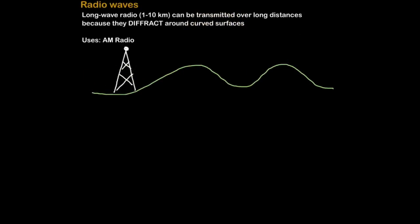First we have radio waves with the longest wavelength. Some radio waves can actually have a wavelength between 1 to 10 kilometres long. That's the distance between one crest of a wave and the crest of the next wave. Because of this they can be transmitted over long distances because they diffract around curved surfaces. So if you imagine a normal wave travels, once it hits a sort of bump it might be absorbed by that bump and that's the end of its journey.